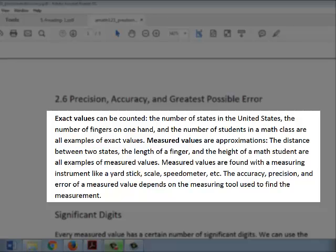Exact values are values that can be counted, like the number of states in the United States or the number of fingers on one hand.